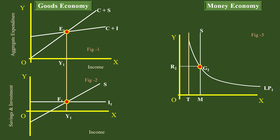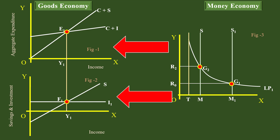The supply of money is increased by the monetary authority. The supply curve of money is shifted to the right. The new supply curve of money is M1S1. It cuts the liquidity preference curve LP1 at G1, and the new interest rate is R0. The theory of money and interest stops the analysis with this — it also doesn't consider its effect on the goods economy equilibrium and its counter effect on money economy equilibrium.